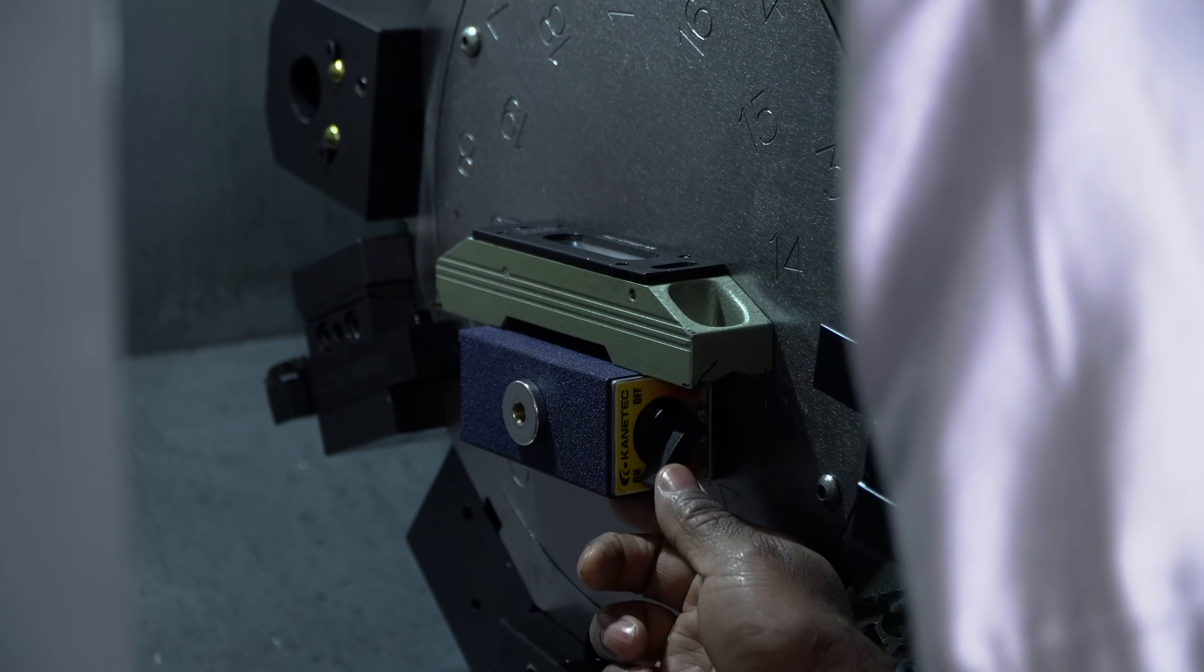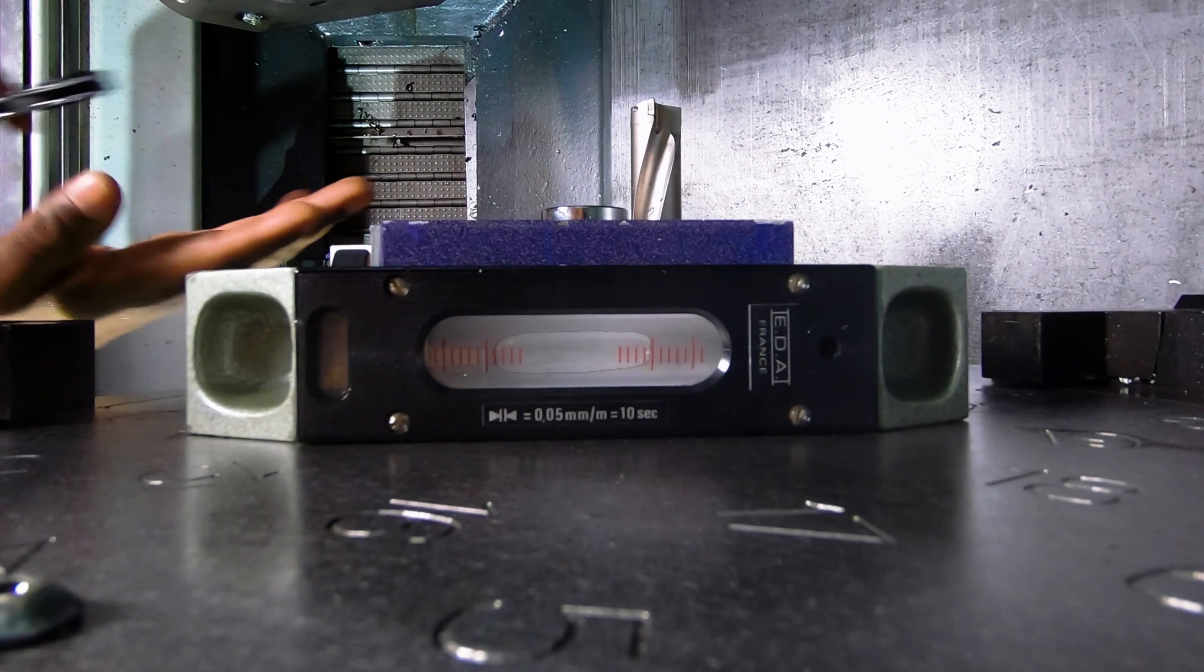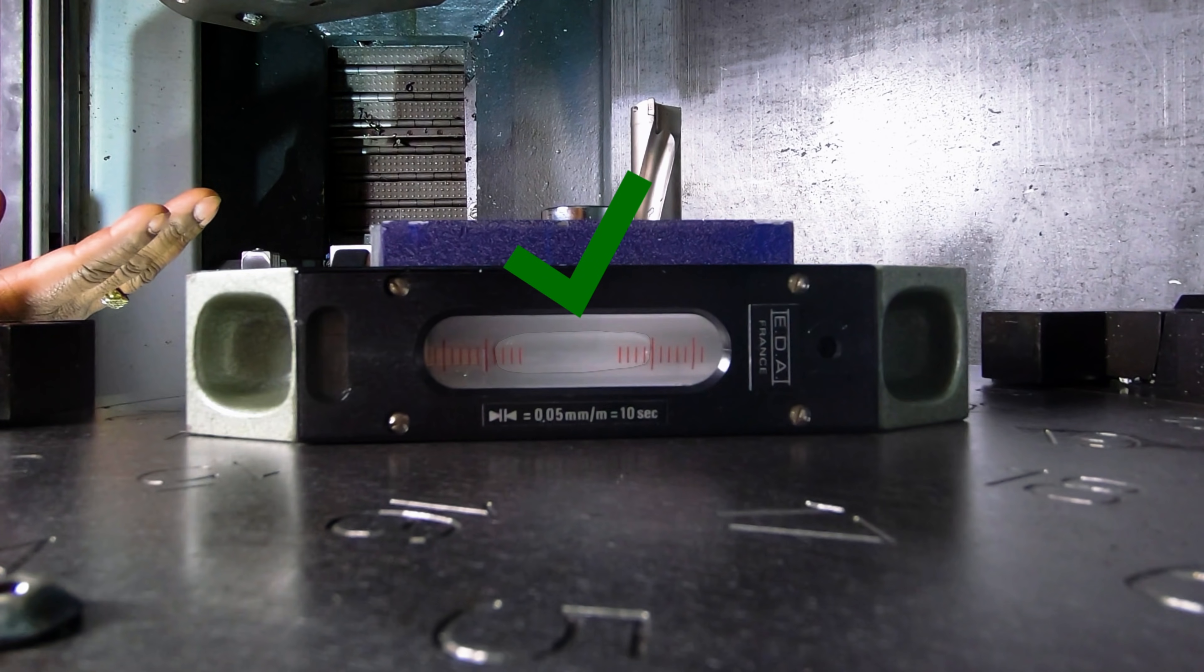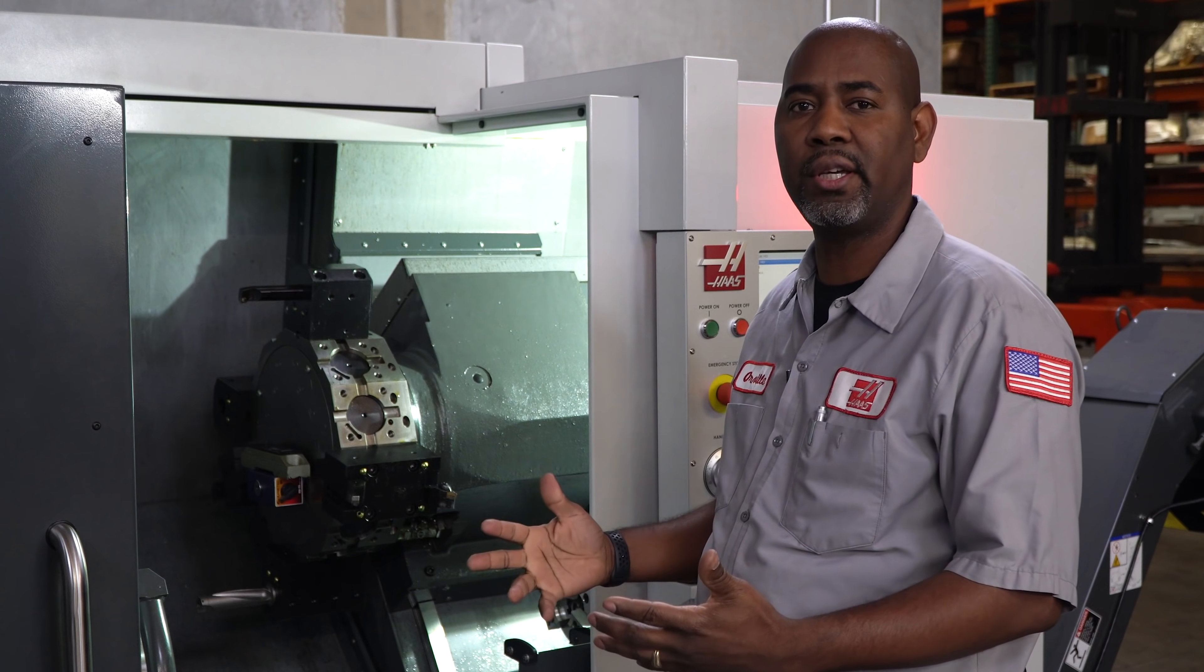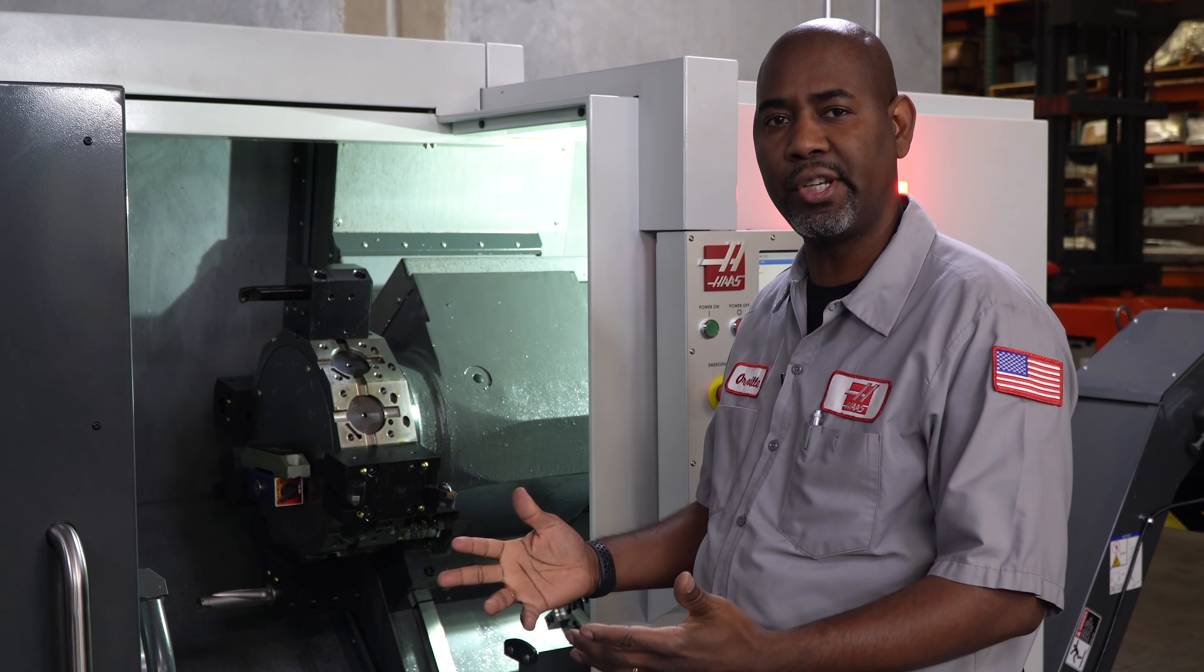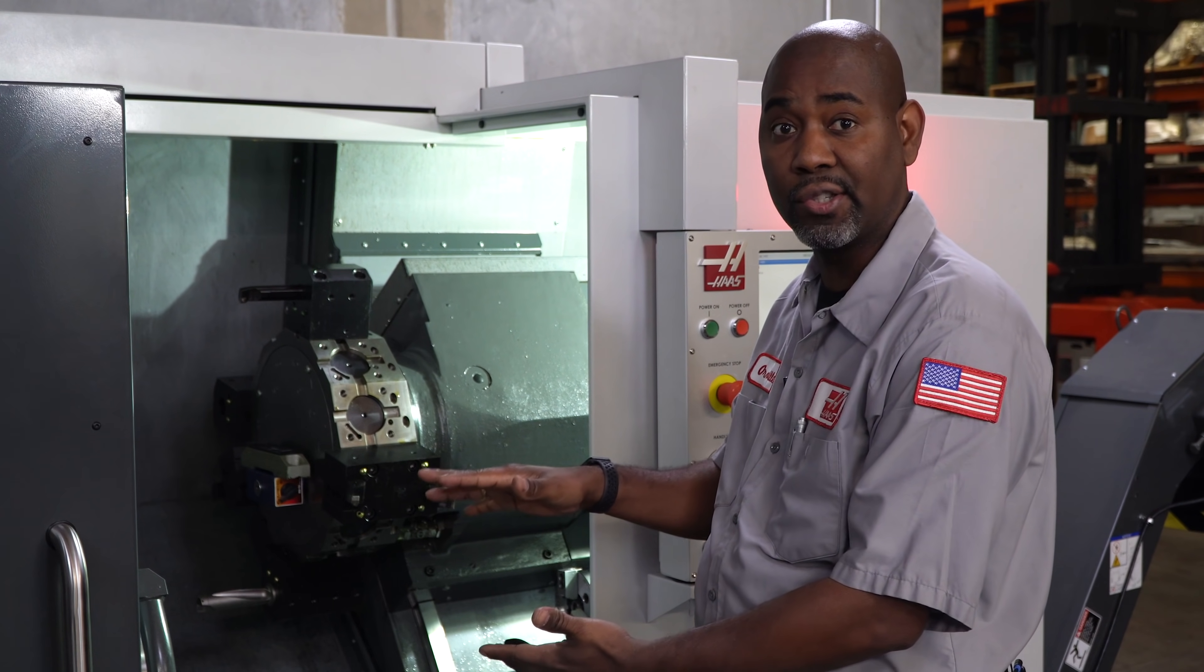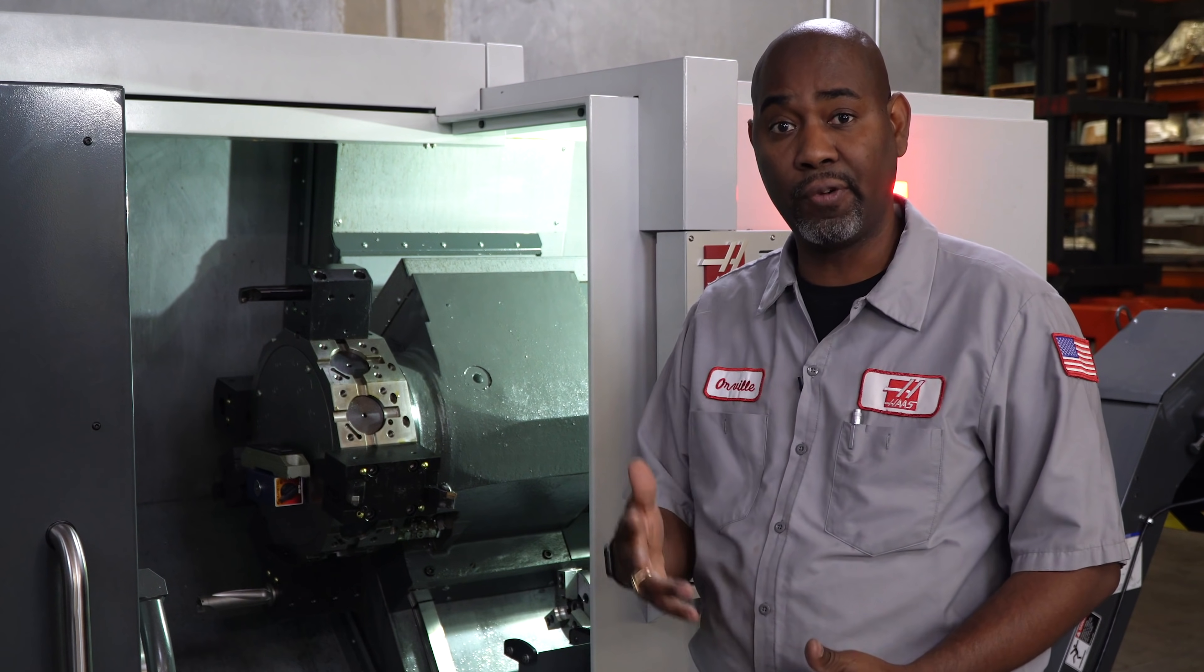Tap the bottom of the mag base around until the bubble is centered in the large vial. When leveling the machine, always raise the machine to keep pressure on the leveling screws and maintain clearance for the coolant tank.